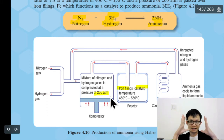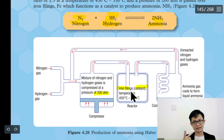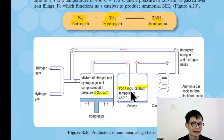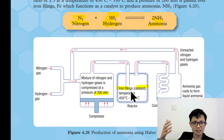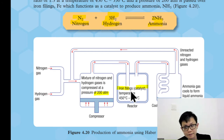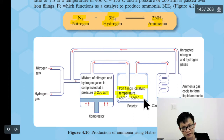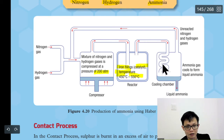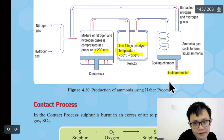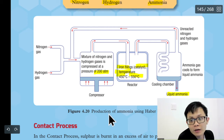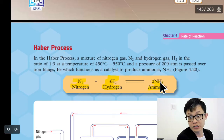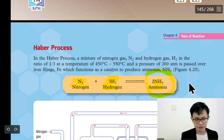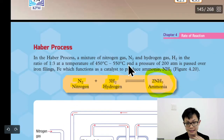First you take nitrogen, mix and compress it with hydrogen at 200 atmospheres — that means pressing the air 200 times. Then you add iron filings as the catalyst. A catalyst is a substance that speeds up the rate of reaction without itself undergoing any permanent changes. You apply a temperature of 450 to 550 degrees Celsius. Then it goes to cooling, becomes liquid ammonia, and can then be used to produce many things.